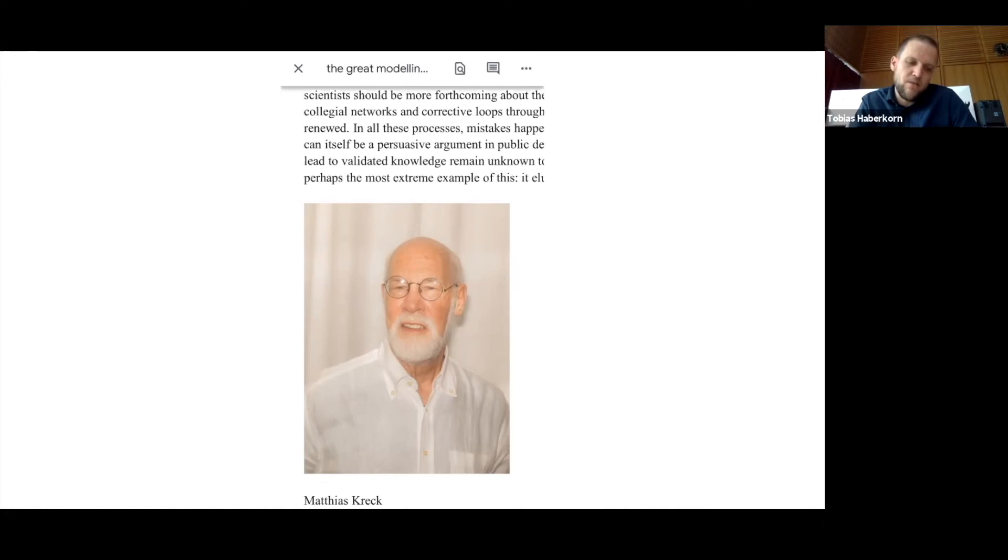The three modelers that Kreck is criticizing most vocally are also the ones who have the most air time or had the most air time in German media and were doing government counseling. The names are Dirk Brockmann, who is head of epidemiological modeling at the RKI, the Robert Koch Institute, which is the federal agency for disease control and prevention; a second one is Viola Priesemann, a researcher at the Max Planck Institute for Dynamics and Self-Organization in Göttingen; and the third one is Michael Meyer-Hermann, who is director of systems immunology at the Helmholtz Center in Braunschweig.